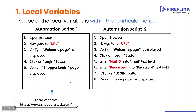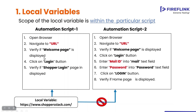If I try to access the same URL variable in my second script, is it possible? No, it is not possible. Because I have created this variable as a local variable. The scope of a local variable is within that particular script only — I can access it only inside automation script one, not in automation script two, because this is a local variable.